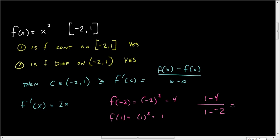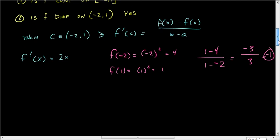So we have the y-values up top, 1 minus 4, divided by the x-values, which is 1 and -2. So we have -3 over positive 3, which is -1.